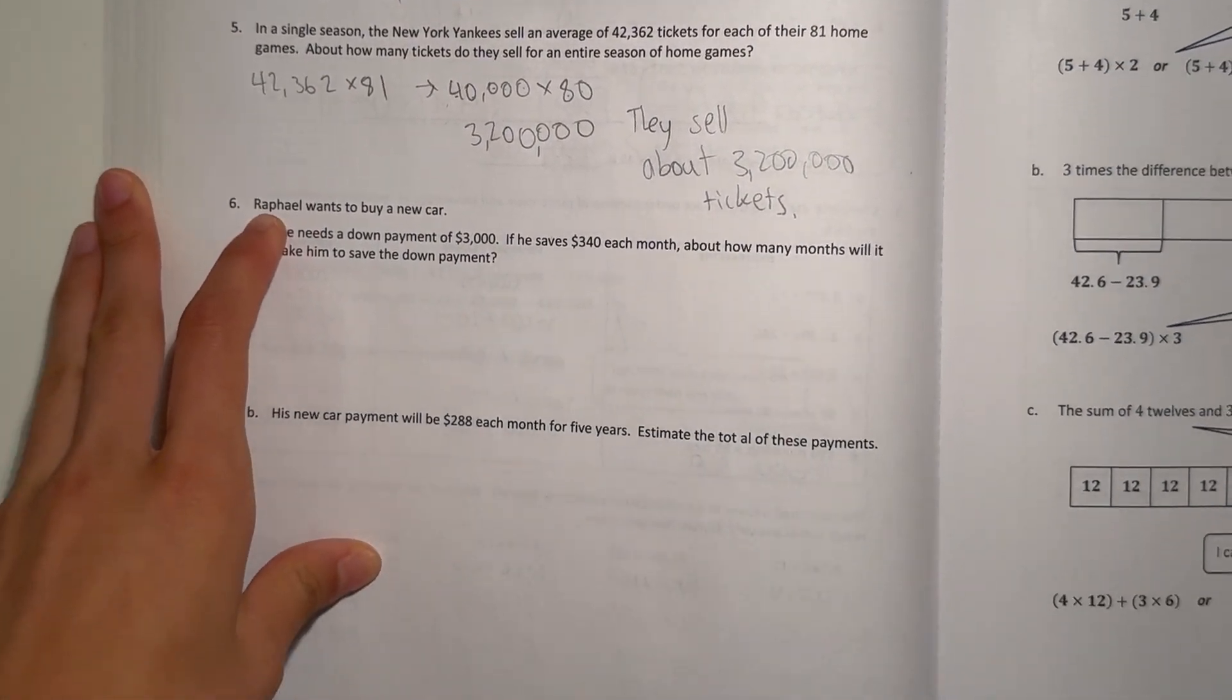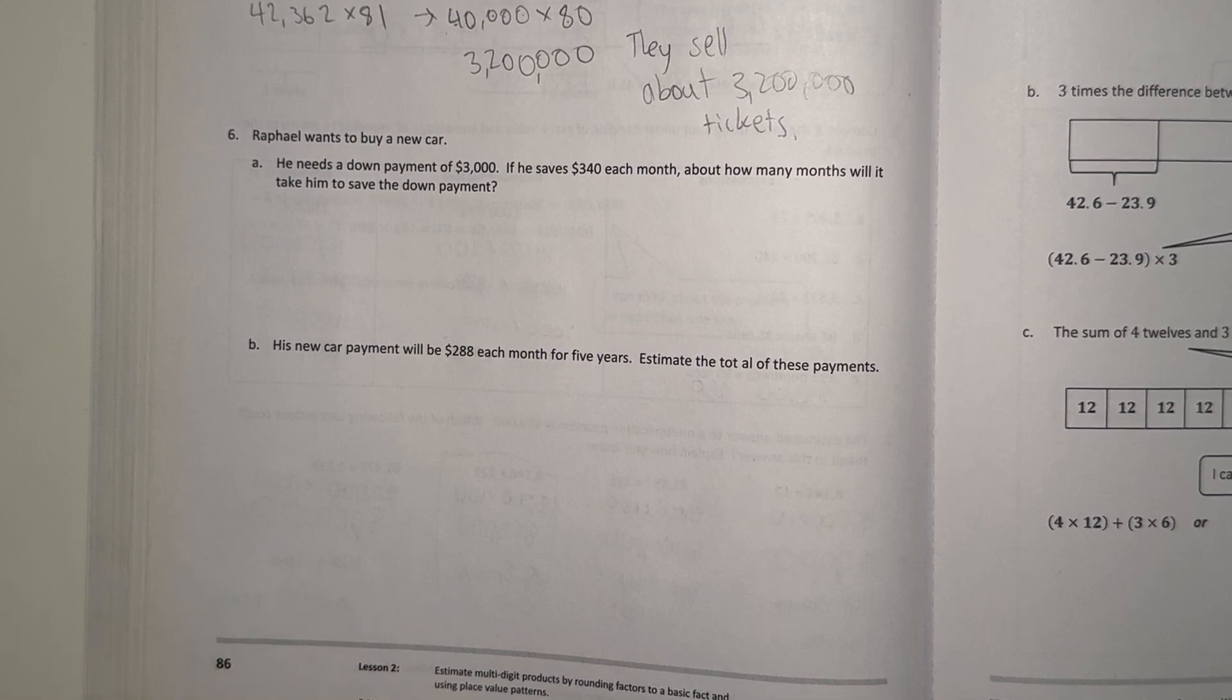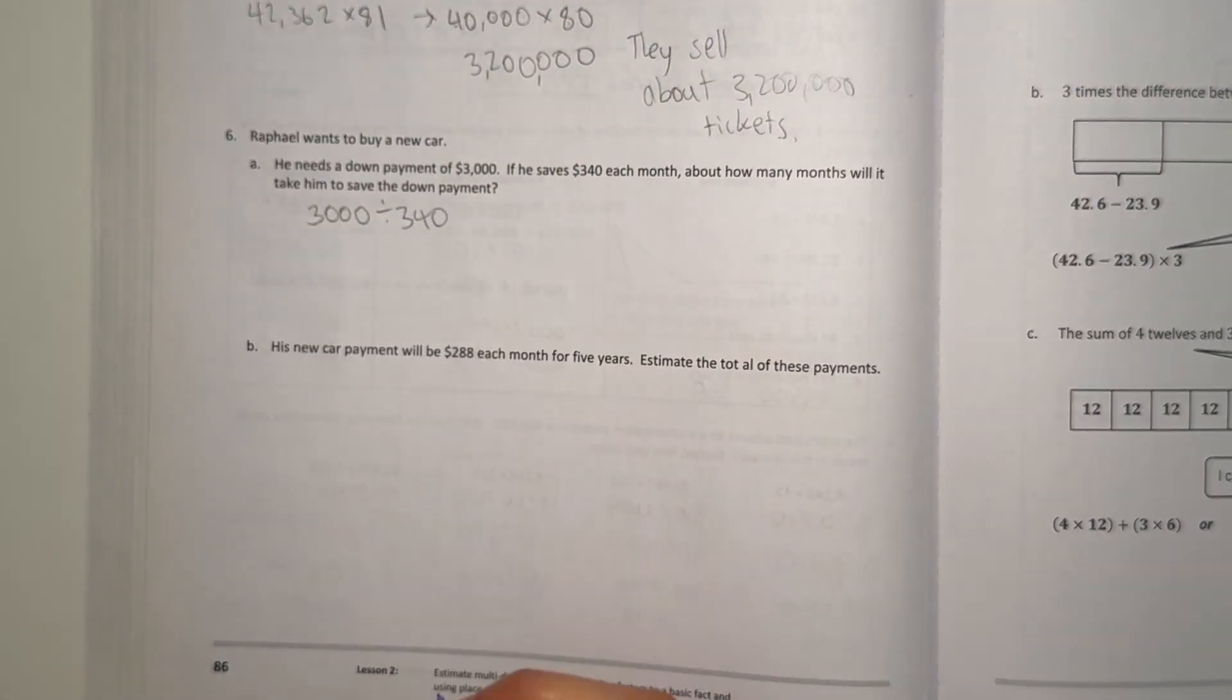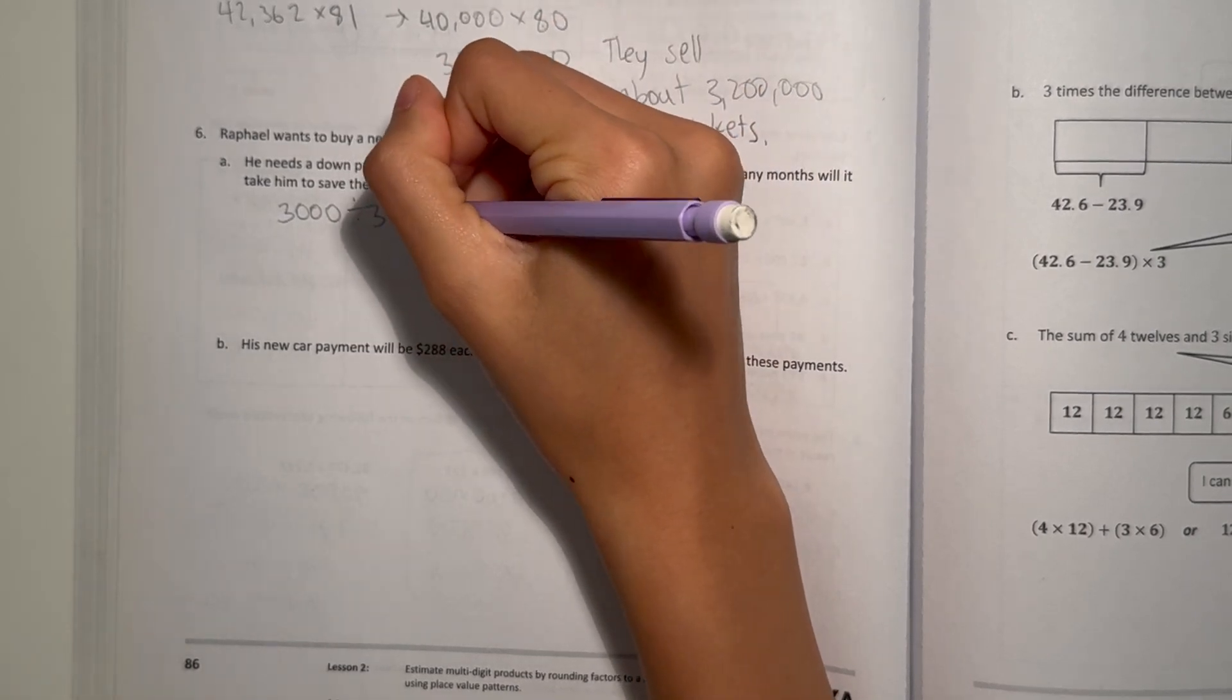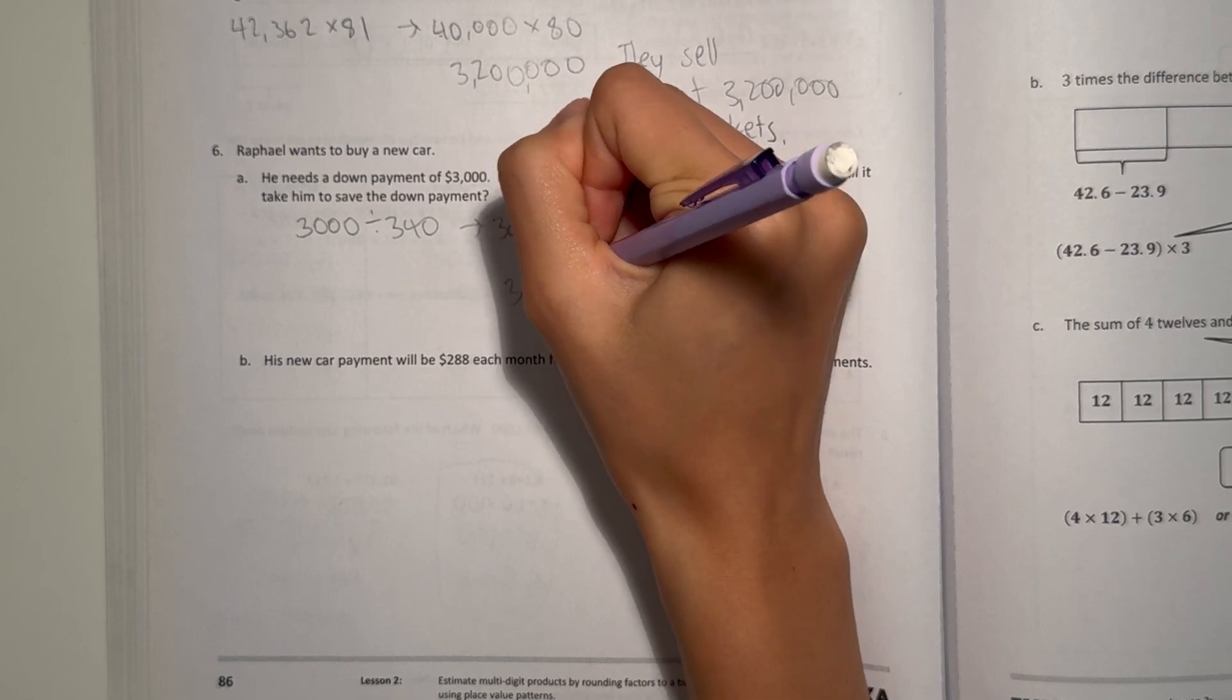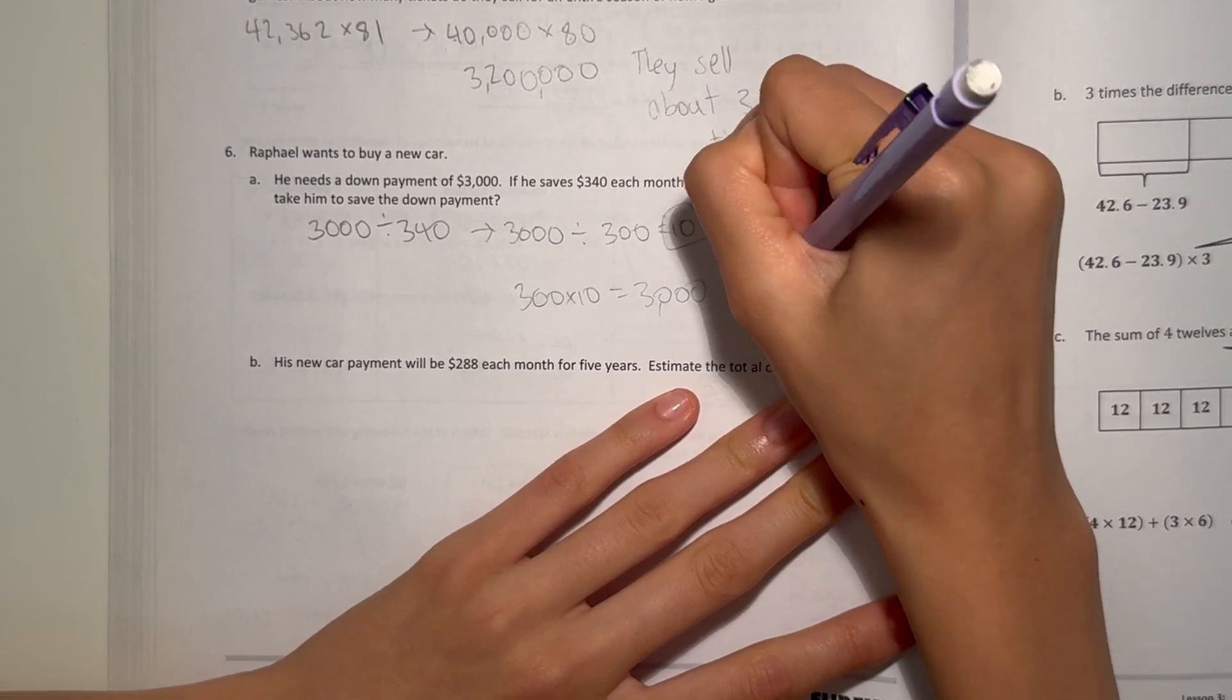Number 6. Raphael wants to buy a new car. He needs a down payment of $3,000. If he takes $340 each month, about how many months will it take him to save the down payment? Our equation here would be 3,000 ÷ 340 each month. 3,000 is already rounded, so then we're going to need to round that, divide by 340 to the nearest hundreds would be 300. 3,000 ÷ 300 would be 10, because 300 × 10, just add another zero, that's 3,000. So about 10 months.